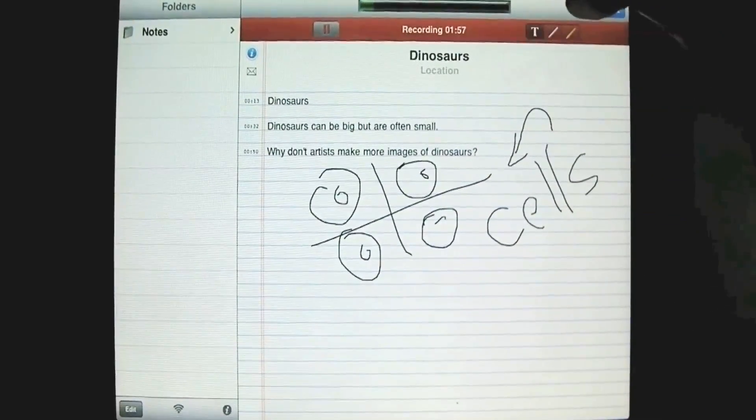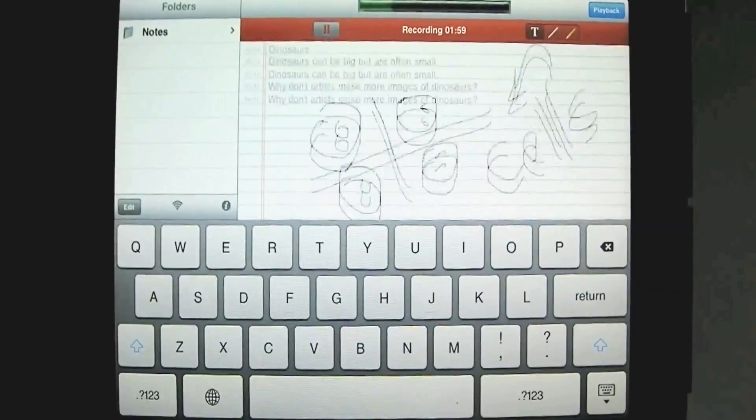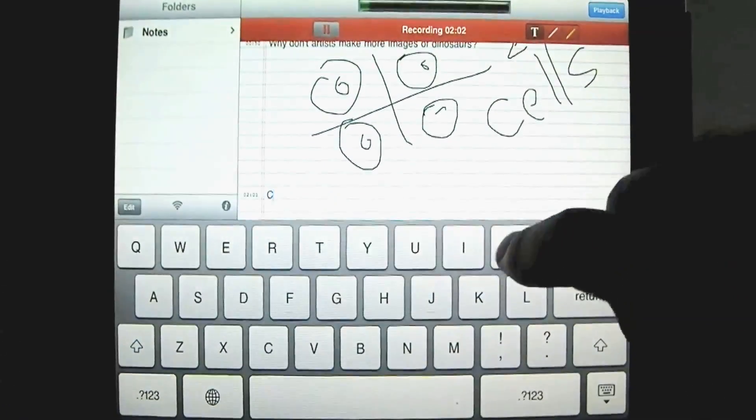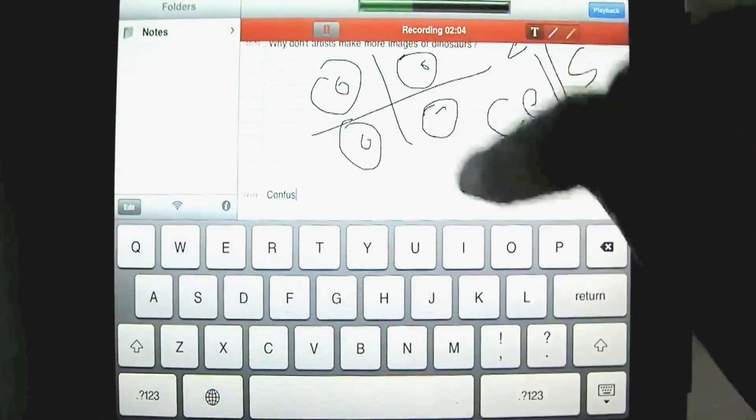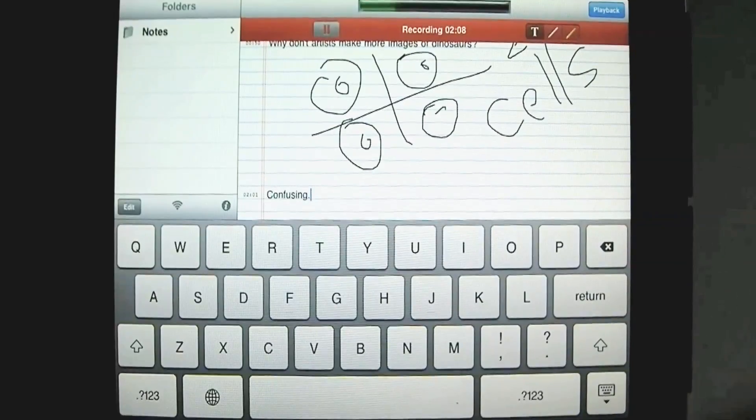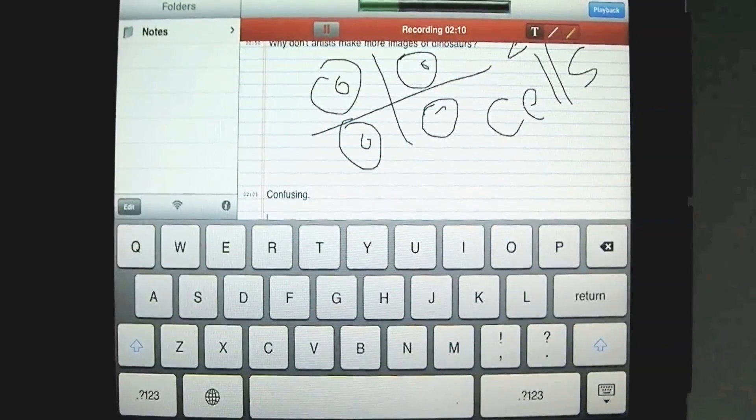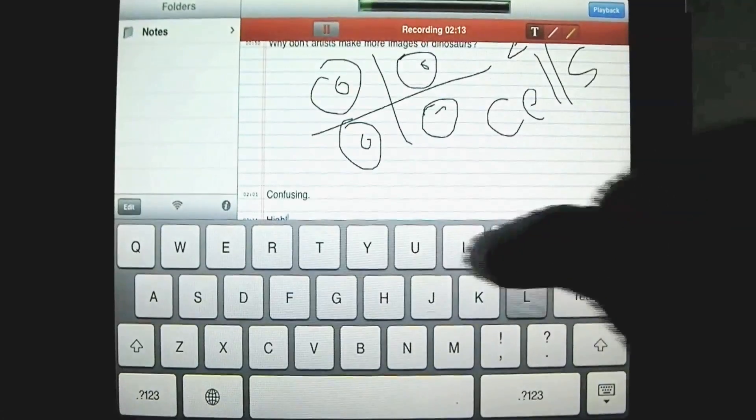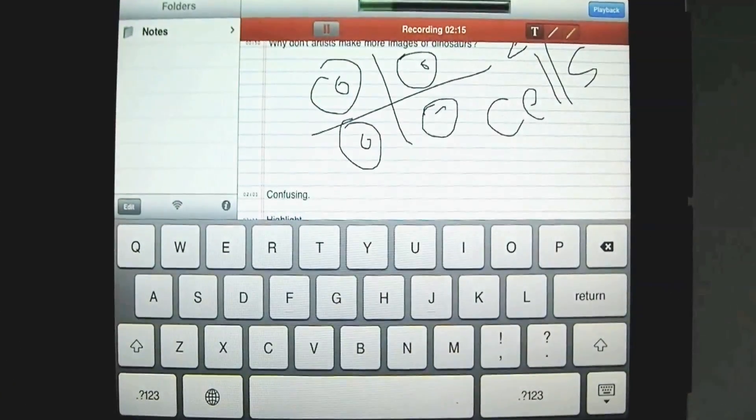Go back to the T tool, the type. And we're going to continue typing. And let's say at this point, the lecturer is saying something that I'm very confused about. It's just confusing, right, at this point. So I'm making a note that I'm confused about it.